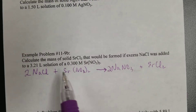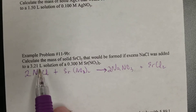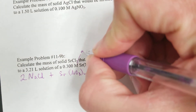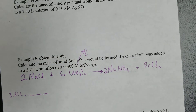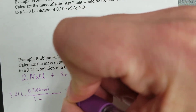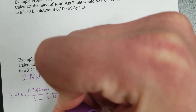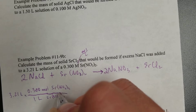First, you need to take what you're given. You can break molarity down to moles per liter. So I'll do this one first: 3.21 liters times 0.300 moles per liter of Sr(NO₃)₂. Adding the chemical identity helps keep things straight.